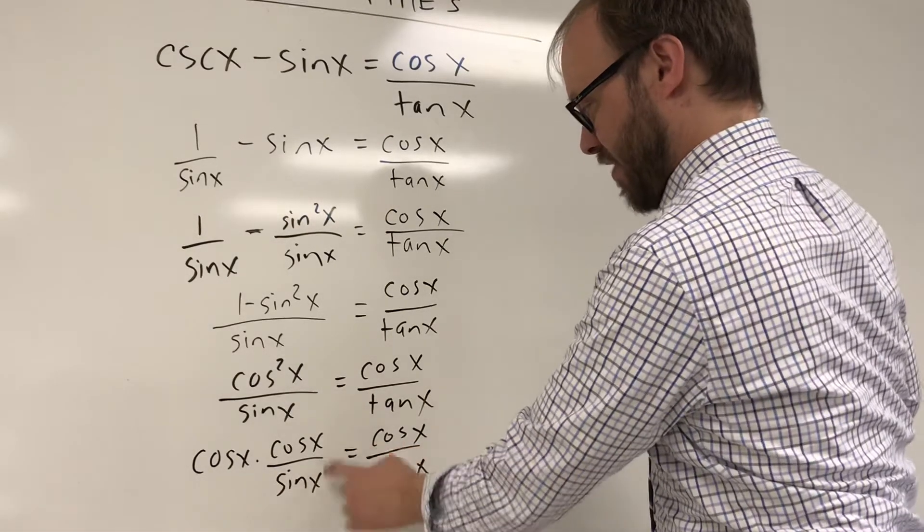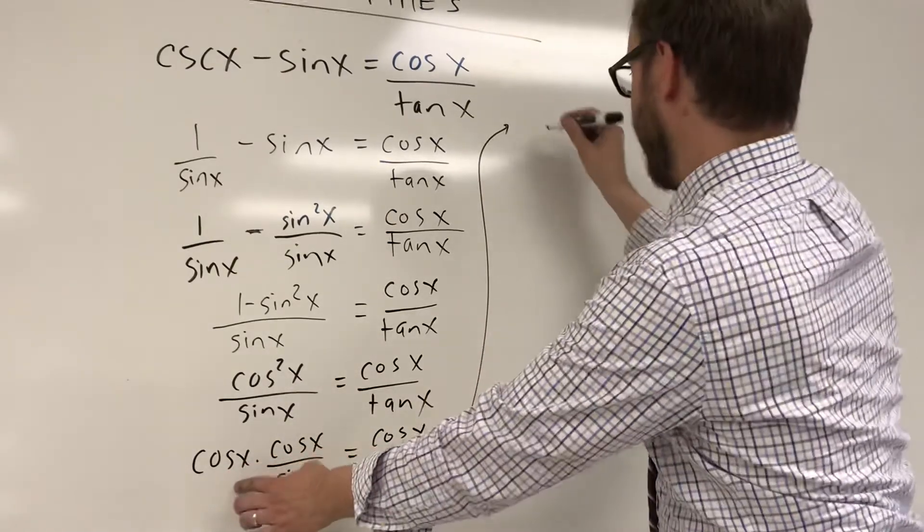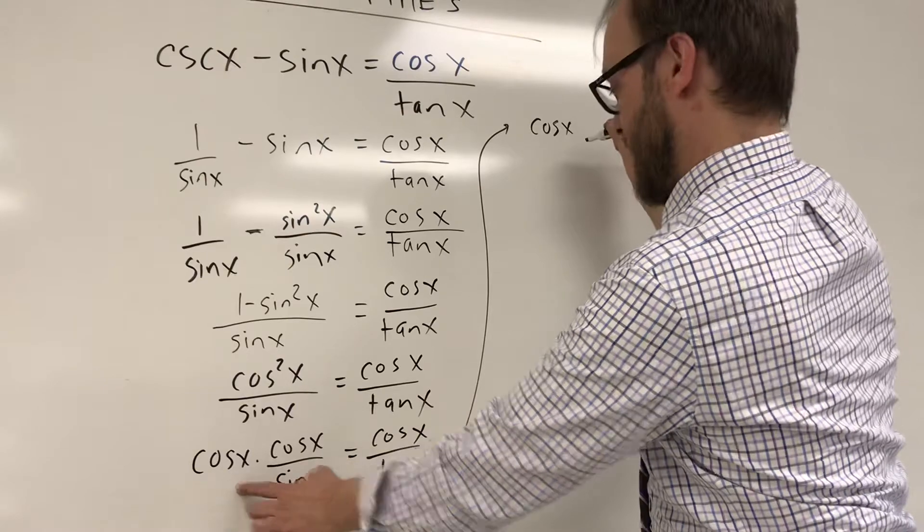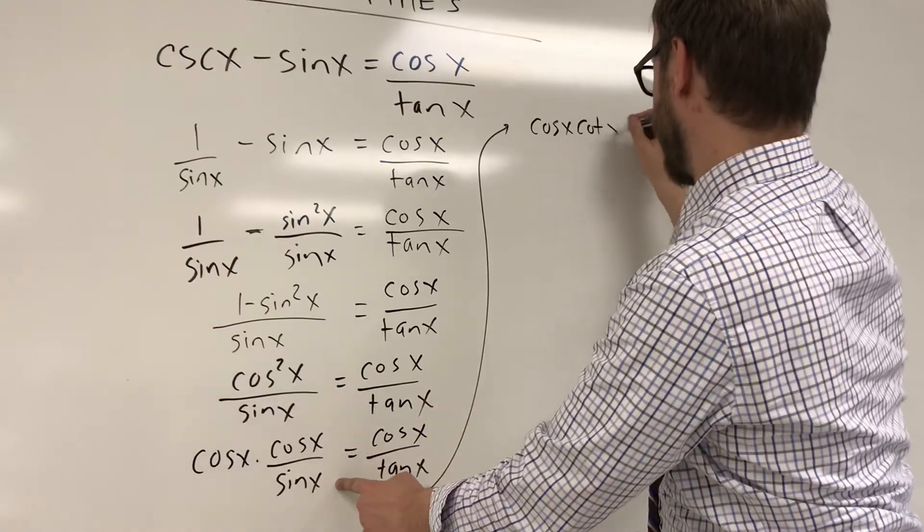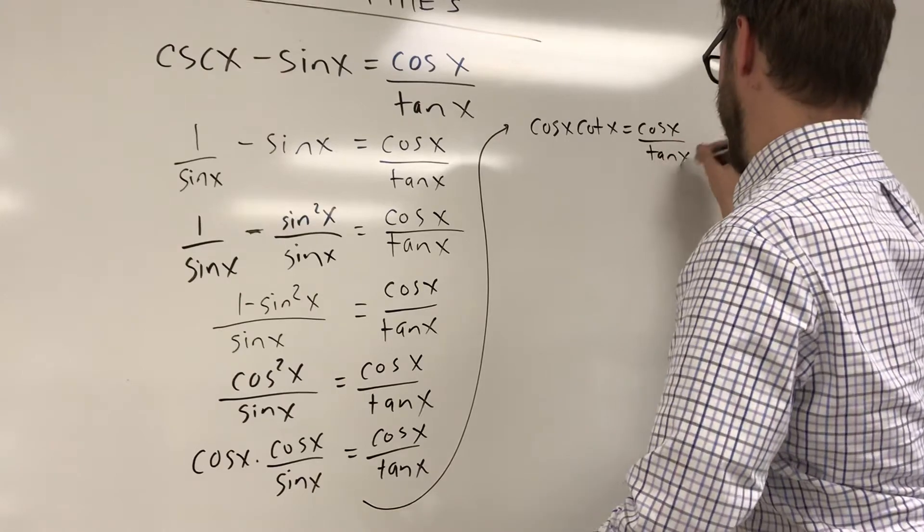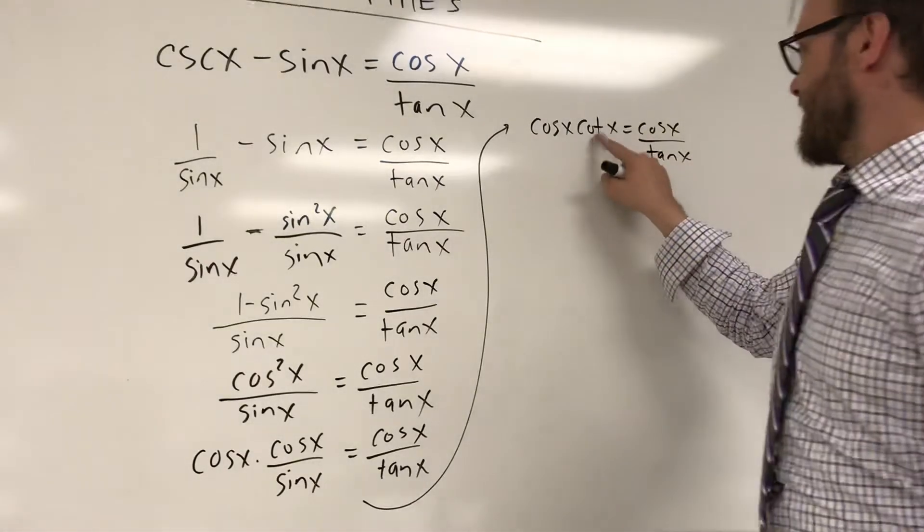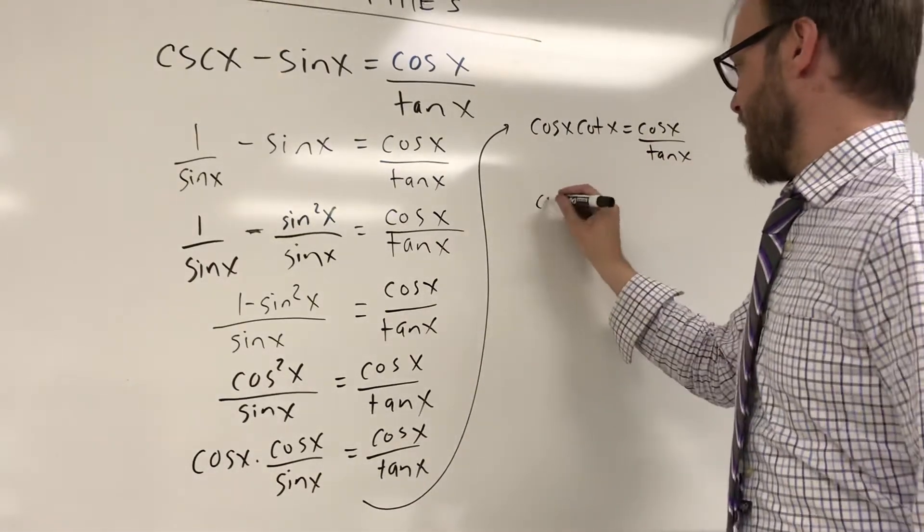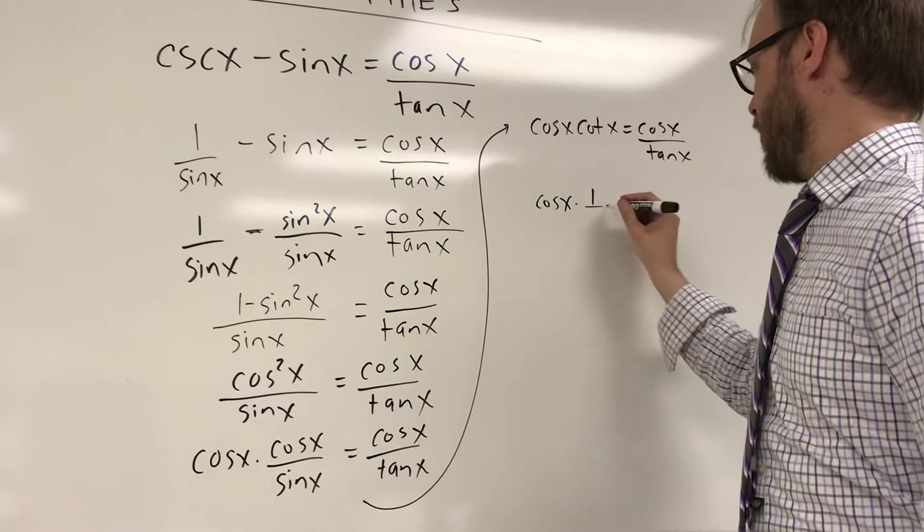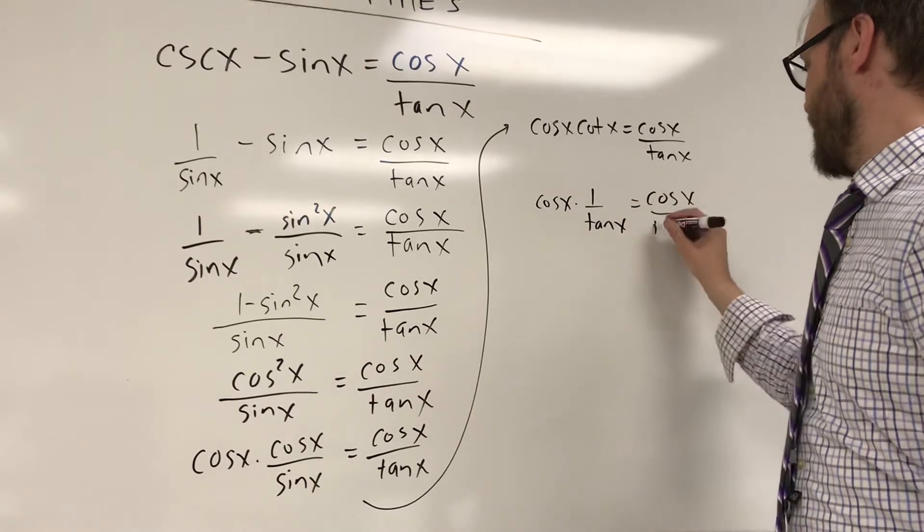So this is the same thing as a cotangent. My next line here would be that I have cosine of x times cotangent of x and that's equal to cosine of x over tangent of x. And basically now hopefully you see where I'm going with this. Cotangent is the same thing as 1 over tangent. So I can replace that with 1 over tangent of x and that would be equal to cosine over tangent.